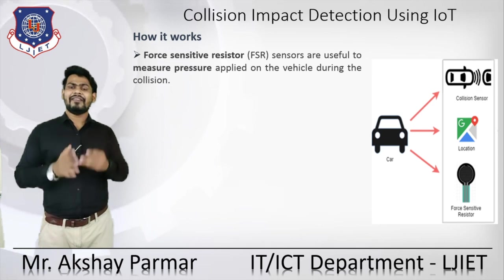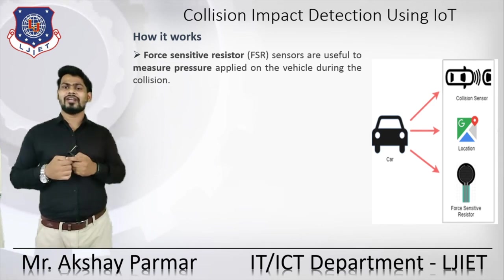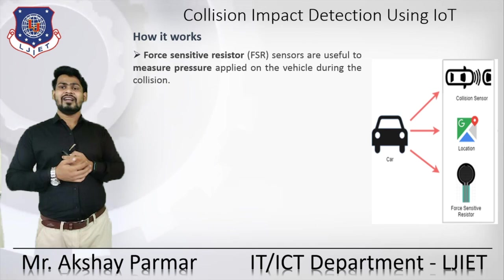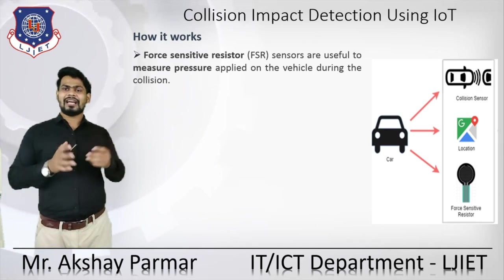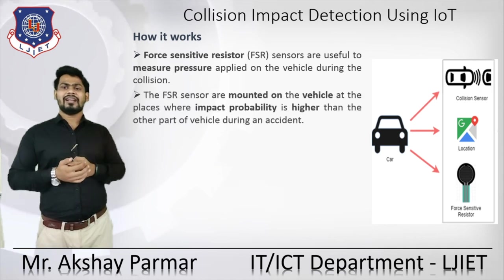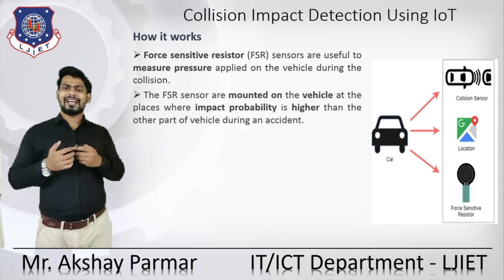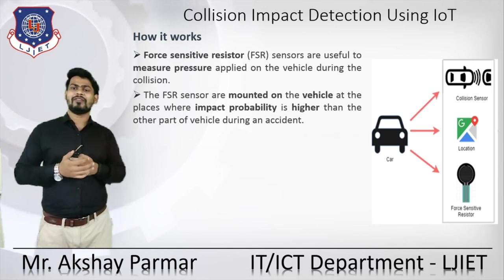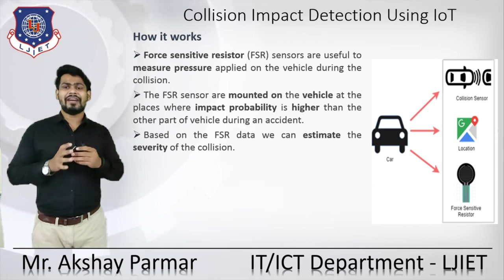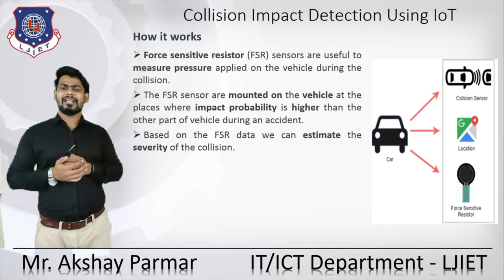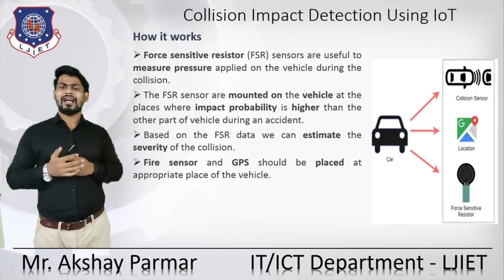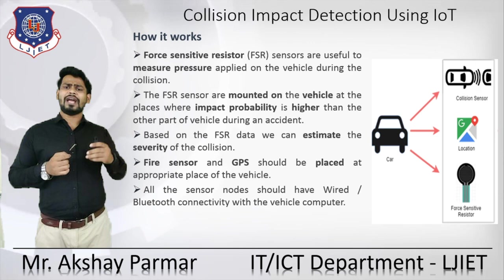The Force Sensitive Resistor (FSR) sensor is used for measuring the pressure applied on the vehicle during a collision. The FSR sensors are mounted on the vehicle at places where the impact probability is highest during an accident. Based on the FSR data, we can estimate the severity of the collision. The fire sensor and GPS should be placed at the appropriate locations on the vehicle, and all sensor nodes should have wired or Bluetooth connectivity with the vehicle computer.